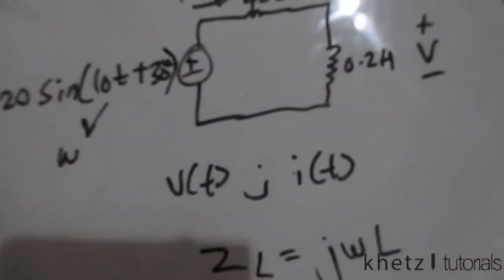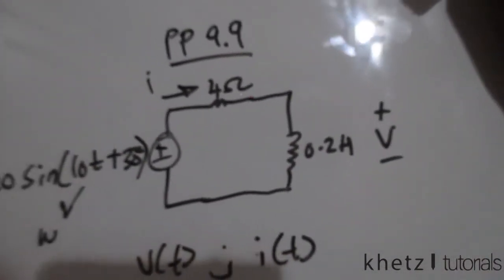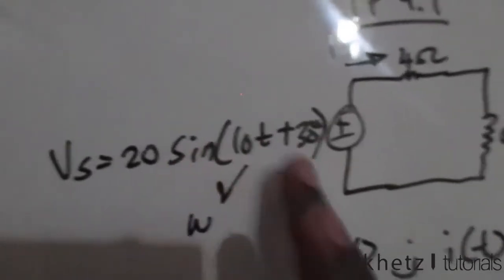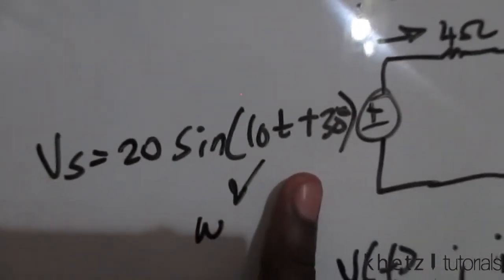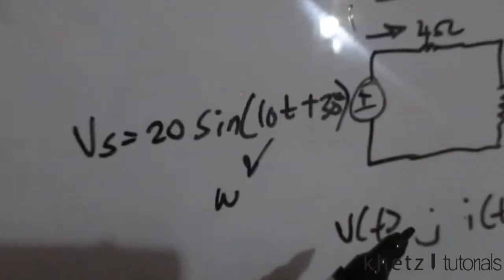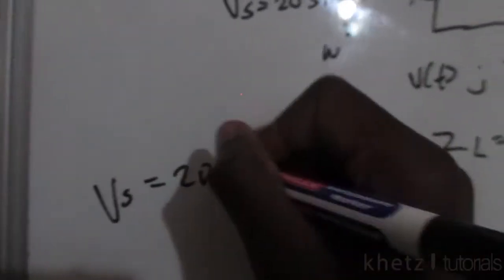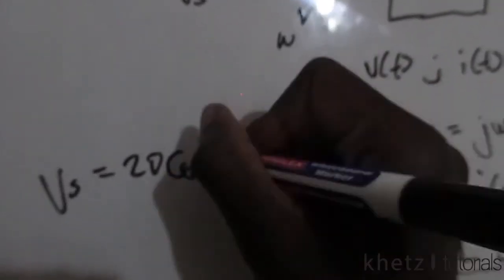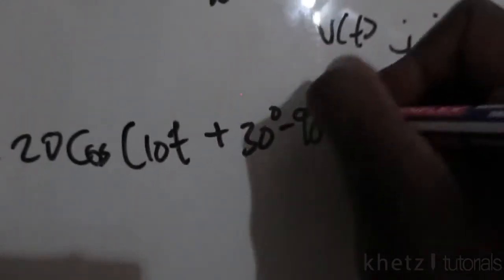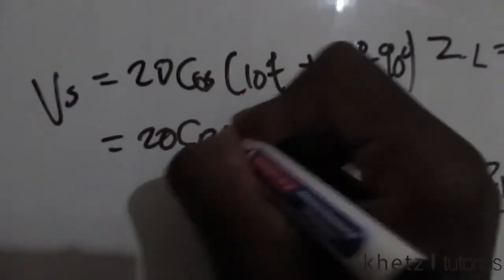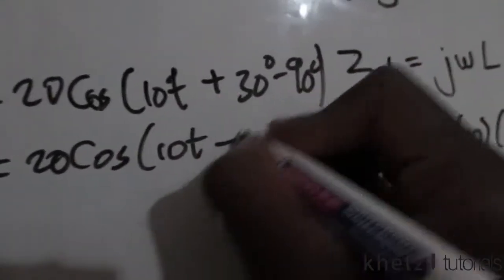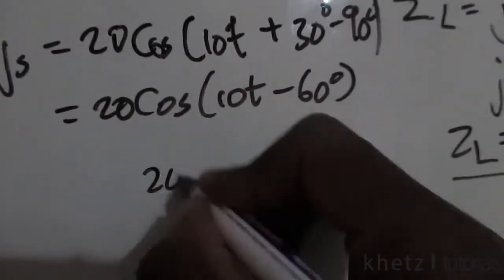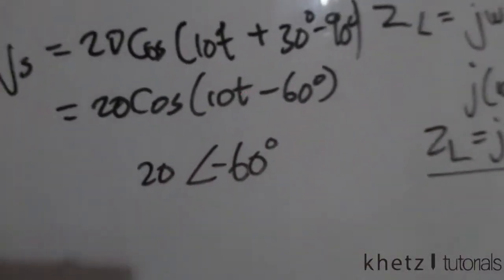Now everything is in ohms and the same units. We're going to transform the sinusoid into a cosine so we can convert it to its corresponding phasor. To do that, vs equals 20 cosine of 10t plus 30 degrees minus 90 degrees. The result is 20 cosine of 10t with an angle of negative 60 degrees, and the corresponding phasor is 20 at an angle of negative 60 degrees.